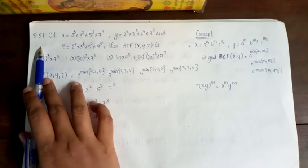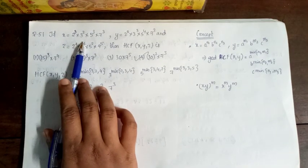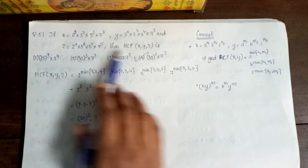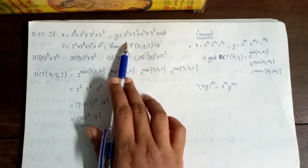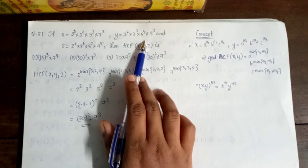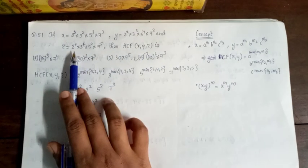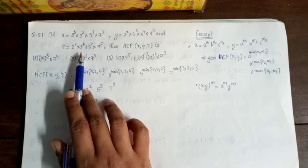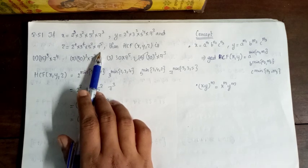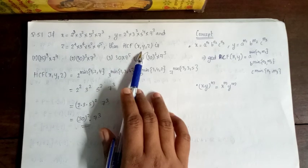Next question, 51. If x is equal to 2 cubed into 3 squared into 5 cubed into 7 cubed, y is equal to 2 squared into 3 cubed into 5 raised to 4 into 7 cubed, and z is equal to 2 raised to some power into 3 power 4 into 5 squared into 7 power 5. Then find the HCF of x, y, z.